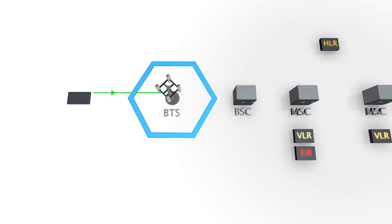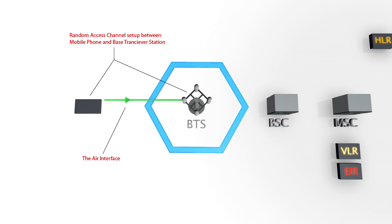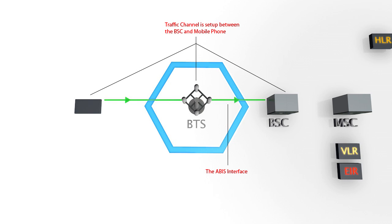This process starts with the mobile device communicating via the air interface with the nearest BTS and requests a random access channel to enter the cellular network. Once this channel has been granted, the BSC allocates a traffic channel which allows the mobile device to send the recipient's mobile number that is stored within a call setup message.